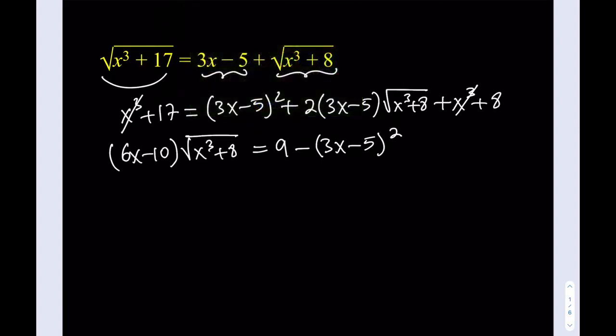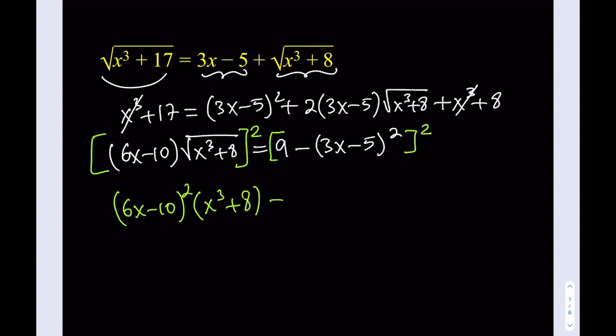So, typically, we will just go ahead and take this and square both sides, right? That would be typical. So, I can just square this one and I can square this one. And that's going to give me what? 6x minus 10 squared multiplied by x cubed plus 8. And that is equal to this expression. Uh-oh. We're getting x squared times x cubed.